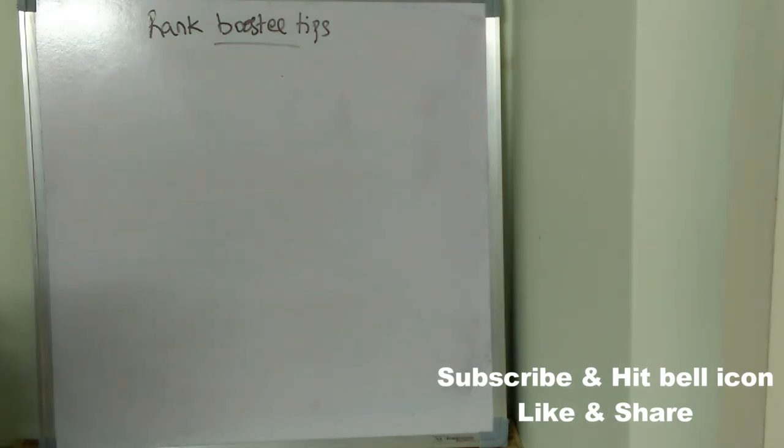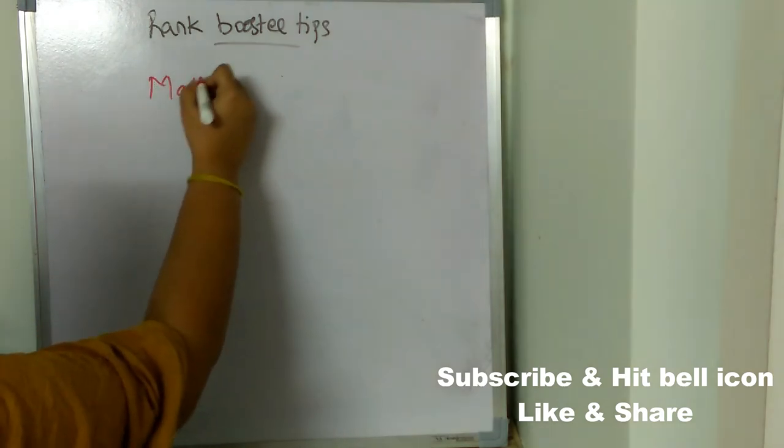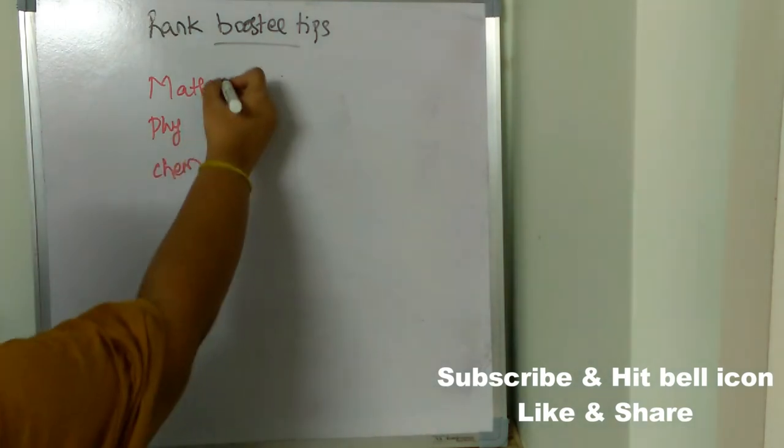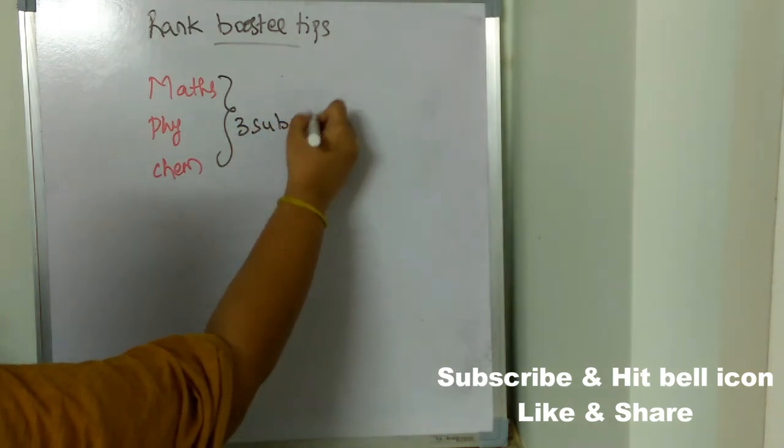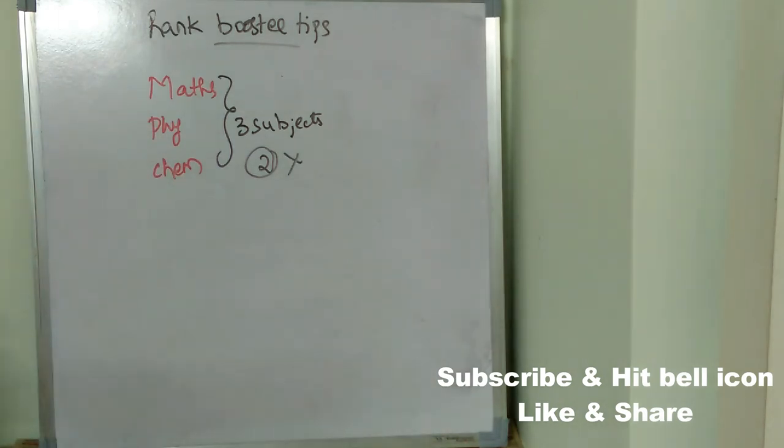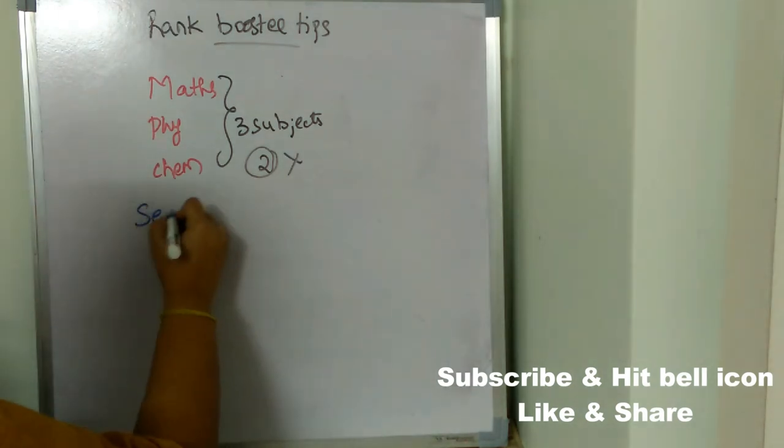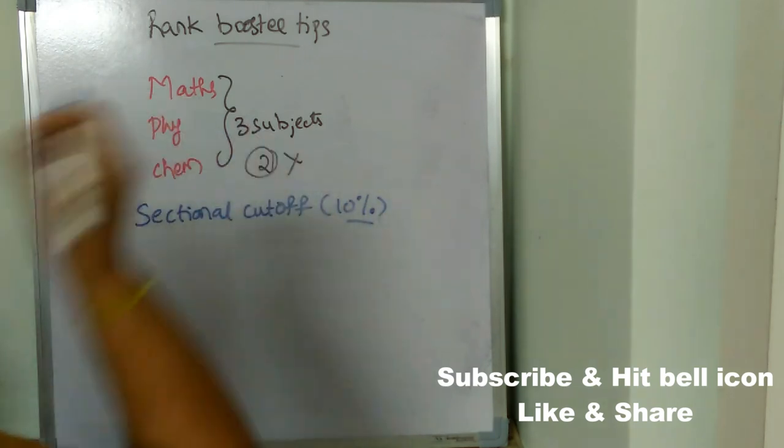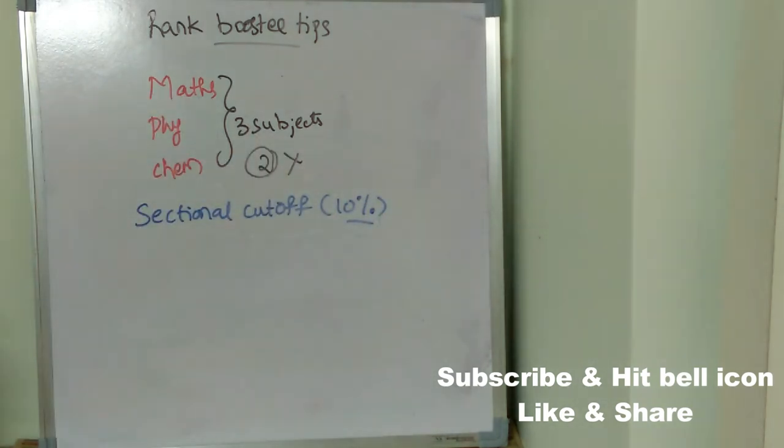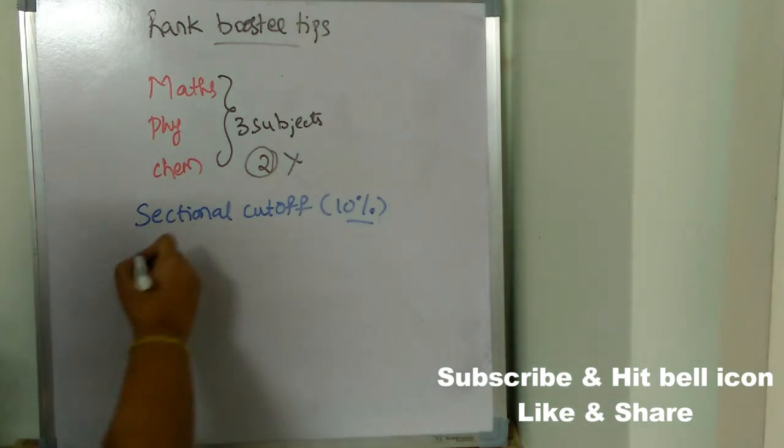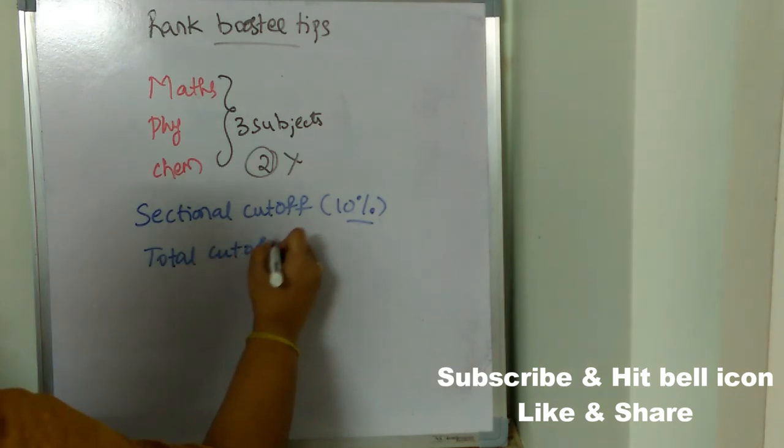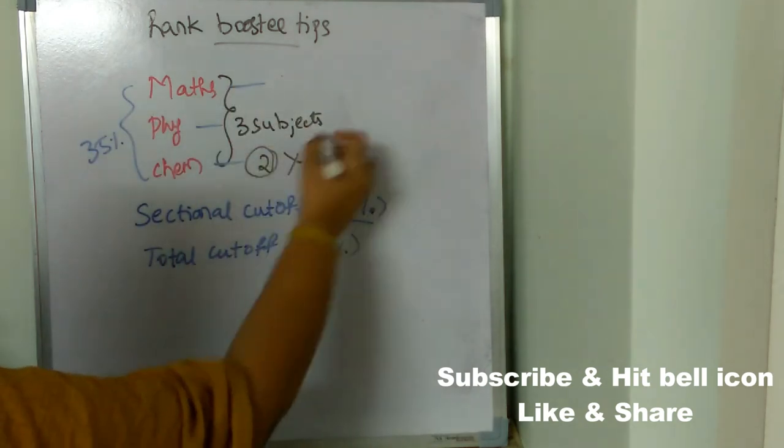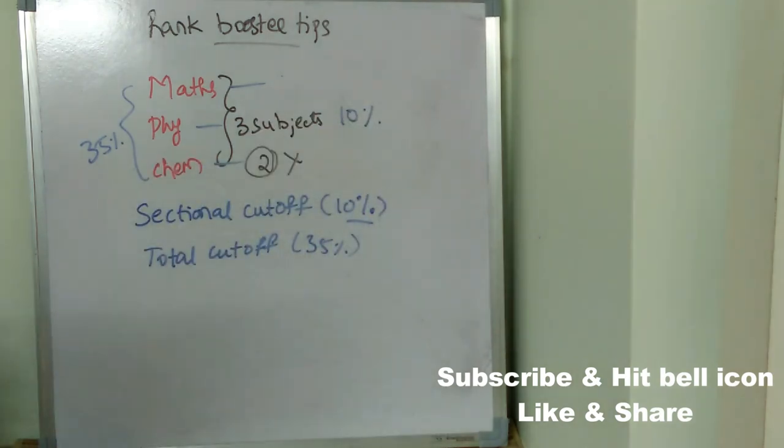An important tip: most students concentrate on only two subjects out of the three - maths, physics, and chemistry. This is absolutely wrong. Don't do that. There is a sectional cutoff of 10% - that is, in every section you must at least get 10%. The total cutoff is 35%. In the entire paper you must get 35%, and in each paper you must get at least 10%. So don't just concentrate on two subjects, concentrate on all three subjects.